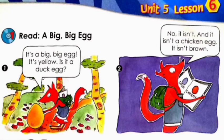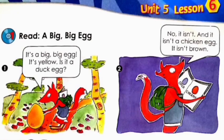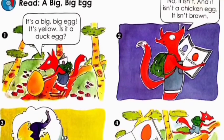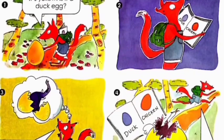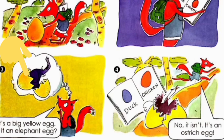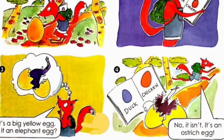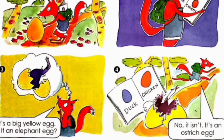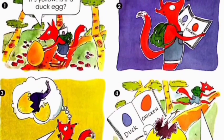Look at picture number one — we have a fox trying to touch an egg. How is this egg? It's very big! In the second picture, the fox is holding his bag and takes out a book showing two eggs. In picture number three, it's an egg of an elephant and the fox is thinking about it. In picture number four, the fox is running — because he sees the egg belongs to an ostrich!